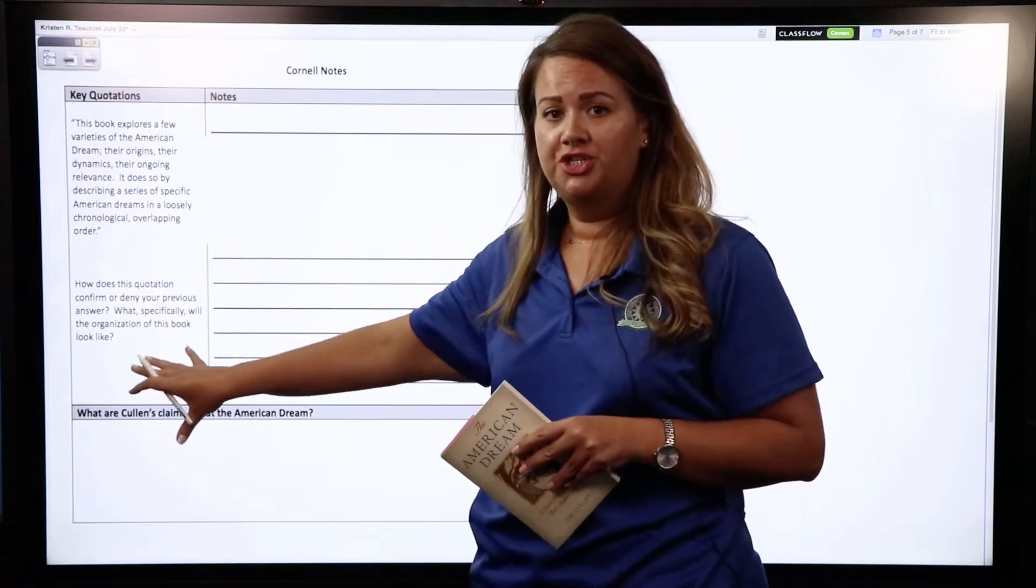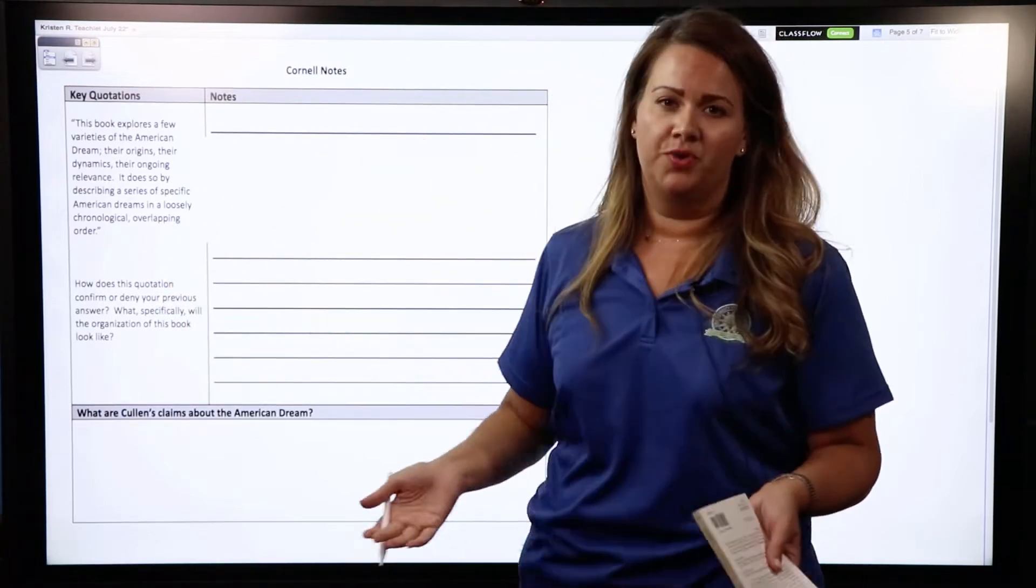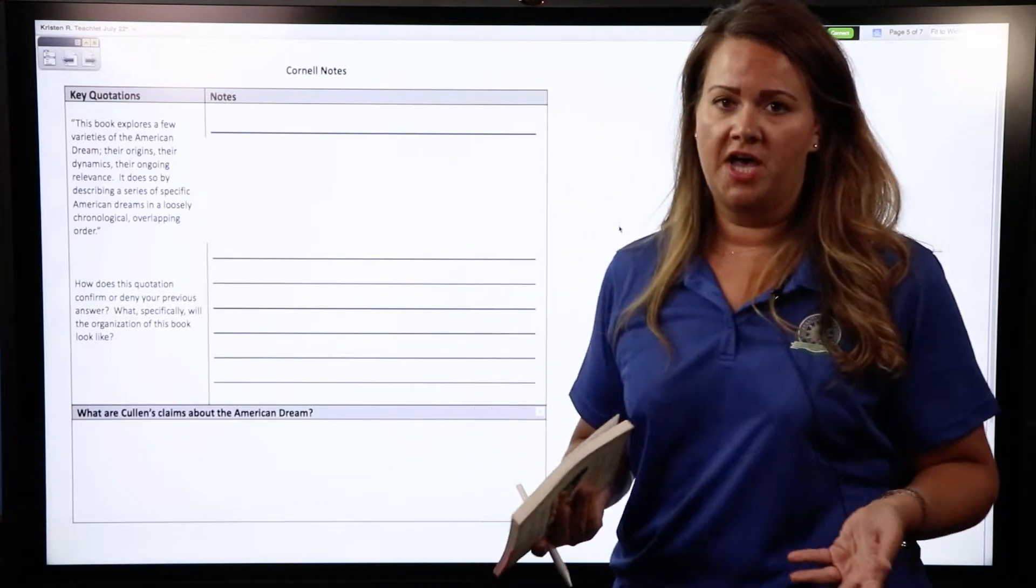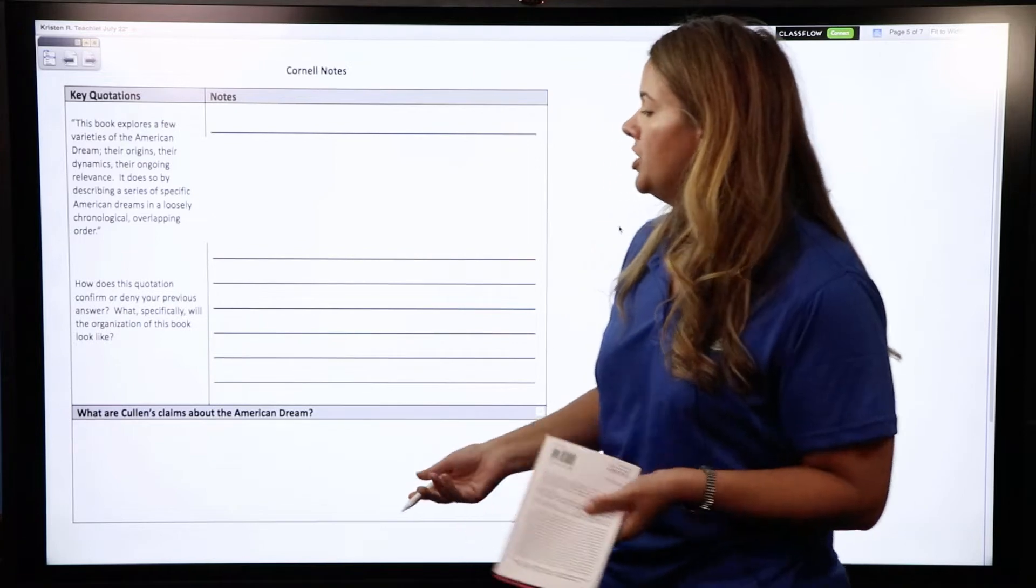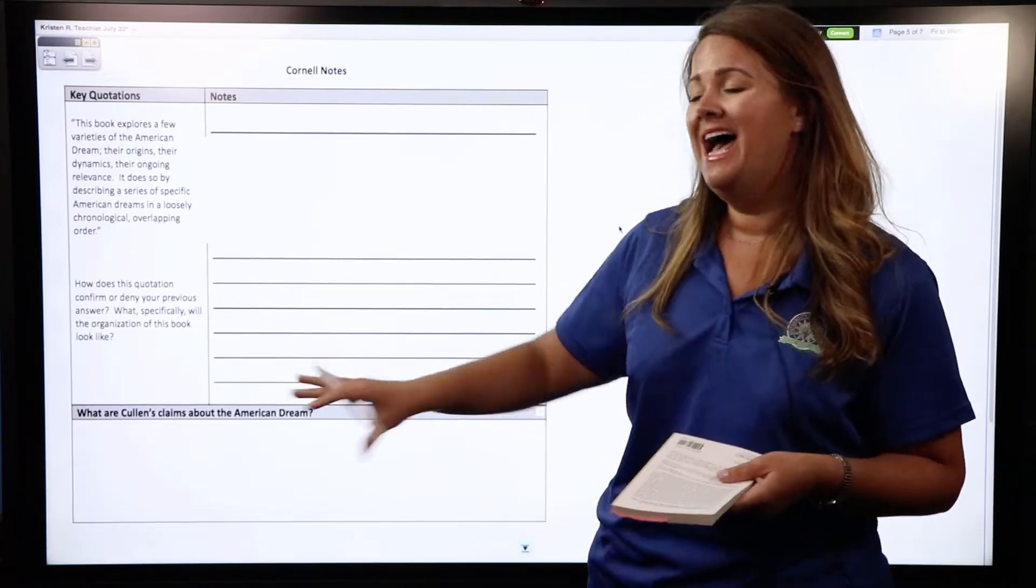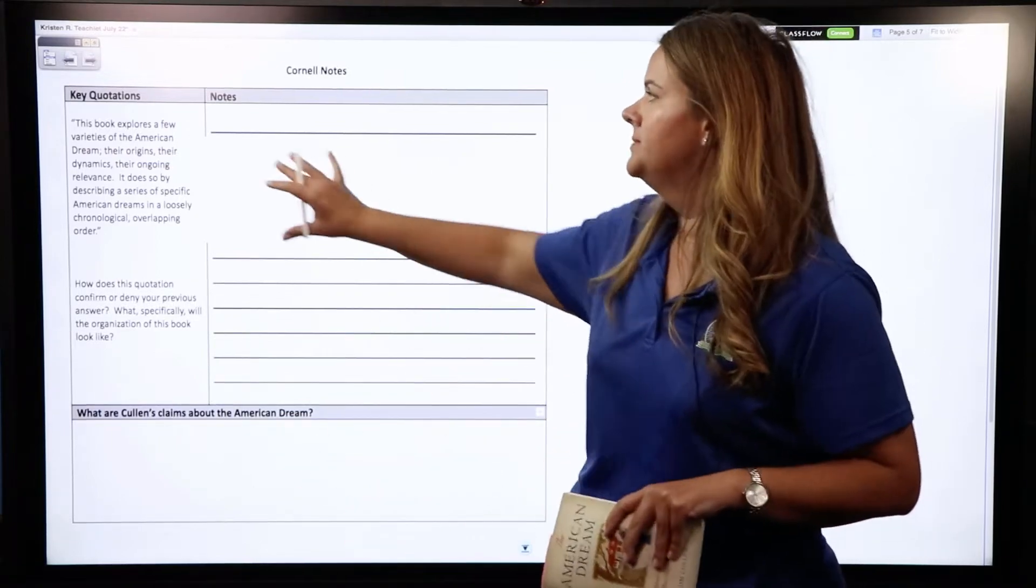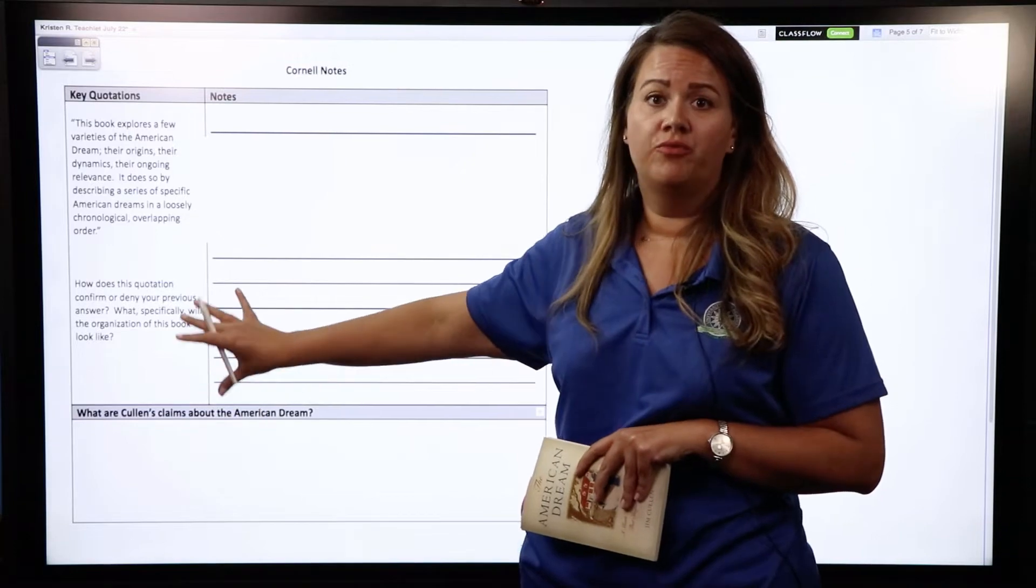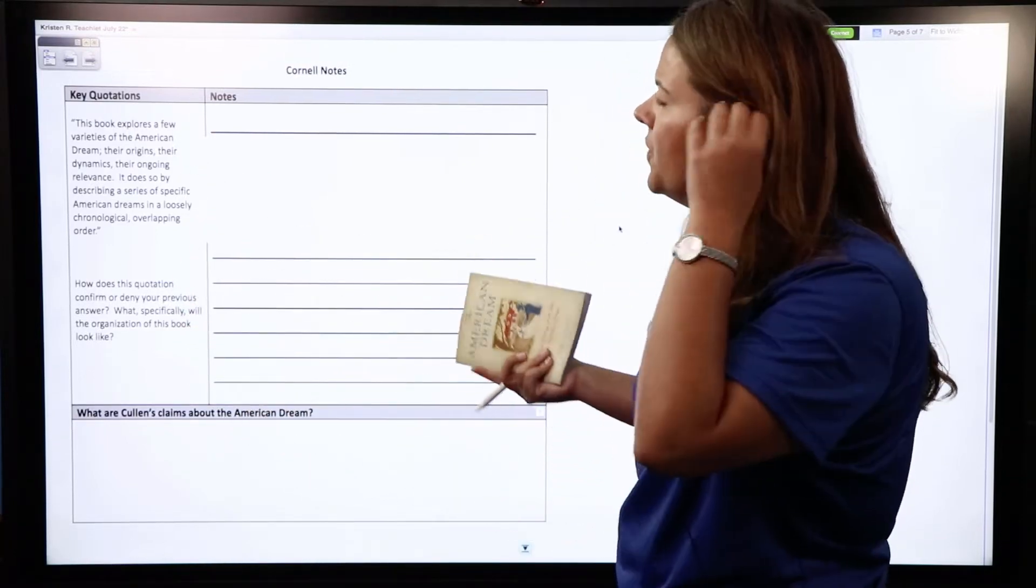You'll see that this is the format for the whole document. You have several quotations and questions over here in your left hand margin, and then on your right hand side that's where you're going to write your notes, your responses. At the bottom of every page you will be asked what are Cullen's claims about the American dream, and of course that summary that you write there should be informed by the information that you have written on this page already.